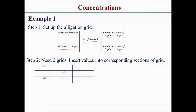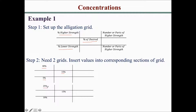Insert the values into the corresponding sections of the grid. For the first grid, you want 40% (the highest strength) on the top left and 5% (the lowest strength) on the bottom left, with 15% in the middle. For the second grid, you want 25% (the second strongest) on the top left and 10% (the third highest, or second lowest) on the bottom left, with 15% in the middle.